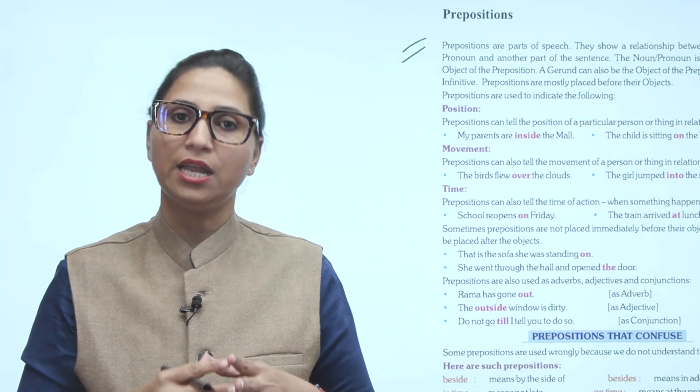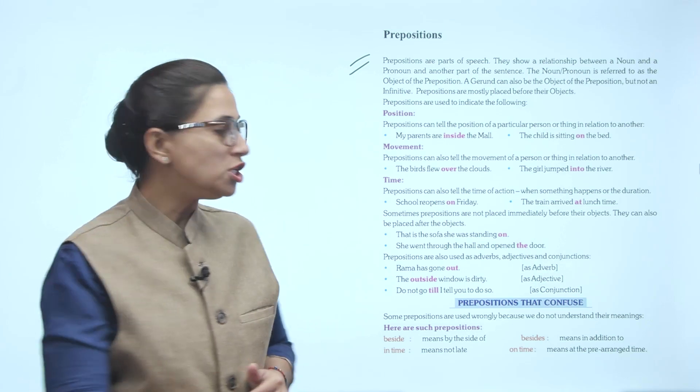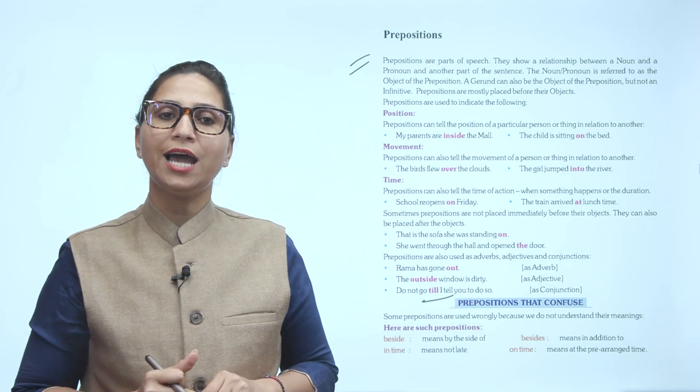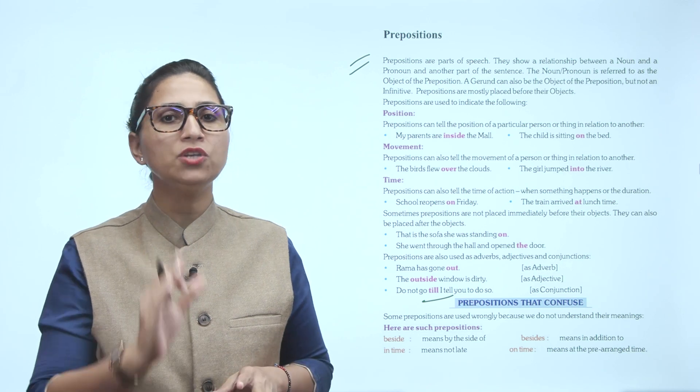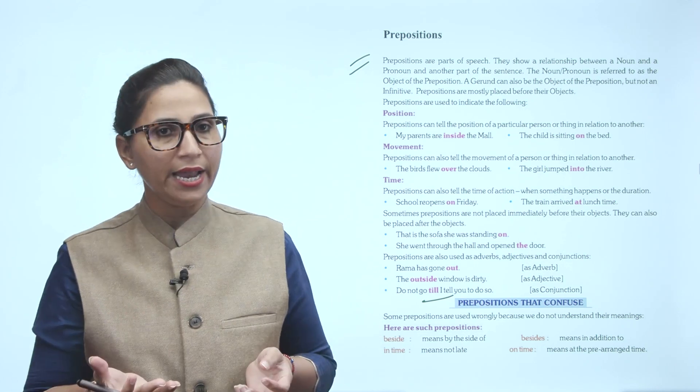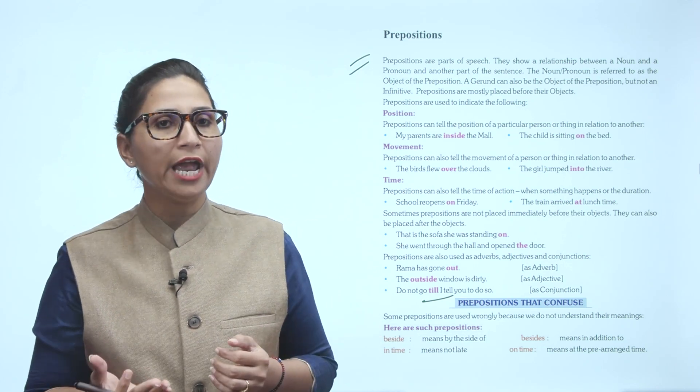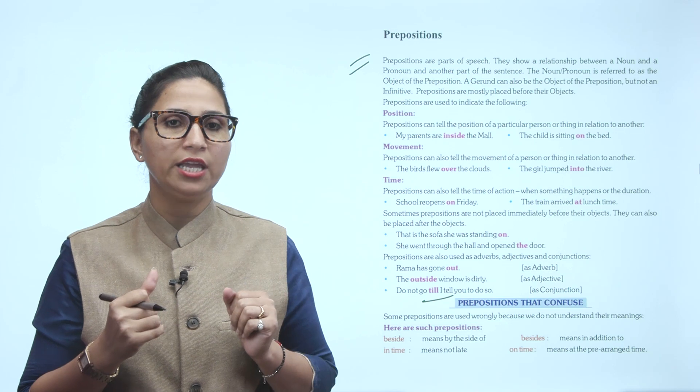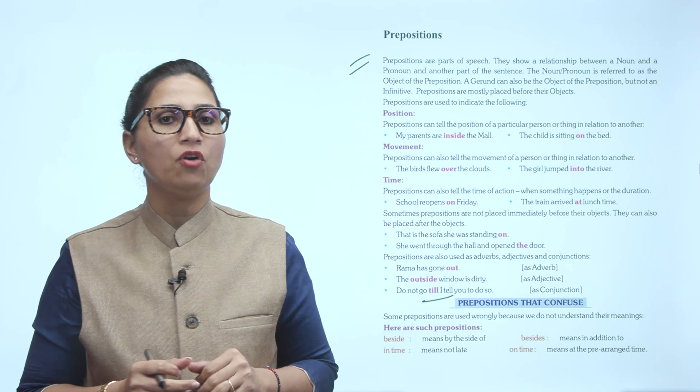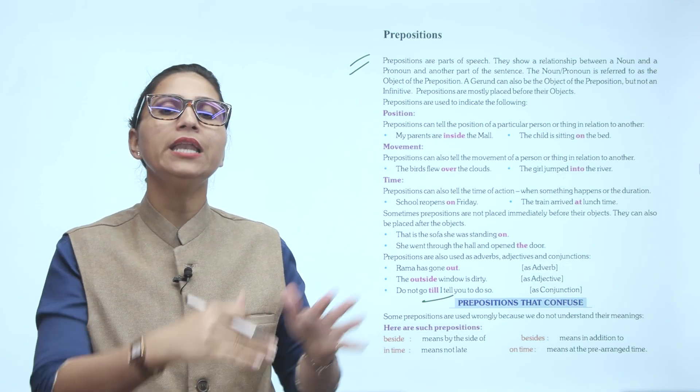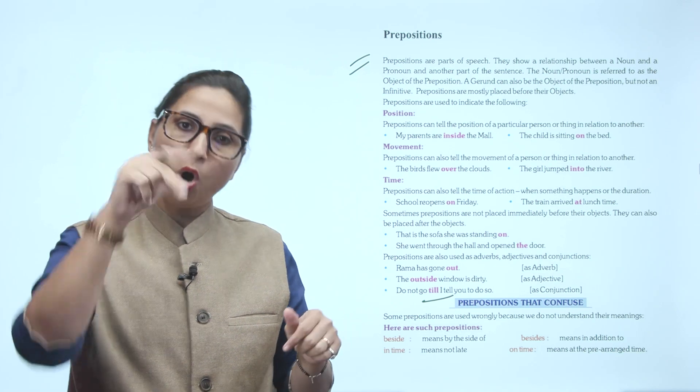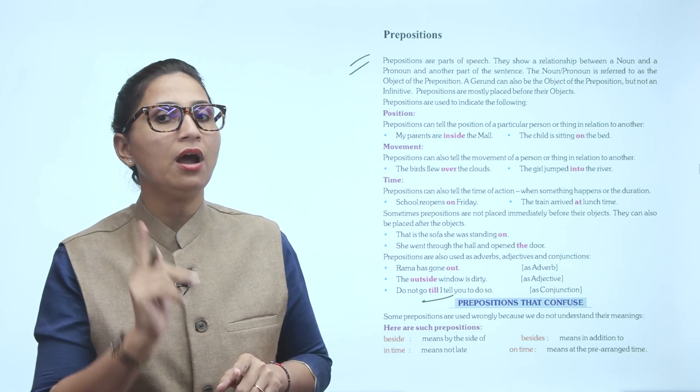Next is prepositions that confuse. Some prepositions are used wrongly because we do not understand their meaning. Here are such prepositions: beside, besides, in time, on time. Sometimes these confuse us. Beside means by the side of, besides means in addition to. In time means not late. On time means at the pre-arranged time.